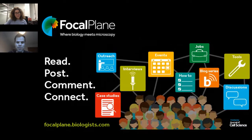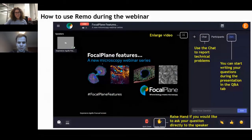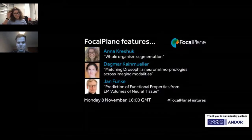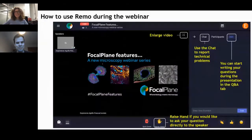We'll have time for some questions after each talk, so please drop your questions at any time in the Q&A box. After the session you also have the opportunity to meet and further discuss with the speakers in Remo. Our first speaker is Anna Kreshuk, group leader at EMBL Heidelberg, probably best known for developing ilastik — an easy-to-use interactive tool that leverages machine learning to segment, classify, track, and count cells. Today she'll focus on whole organism segmentation.